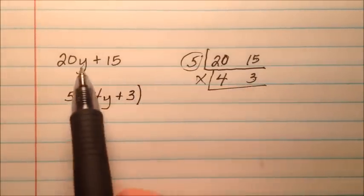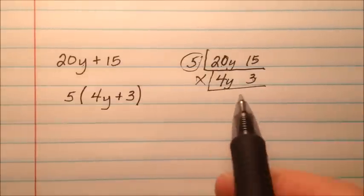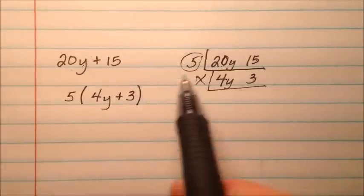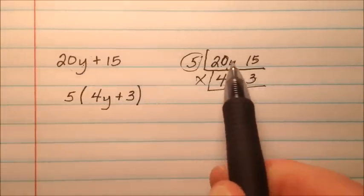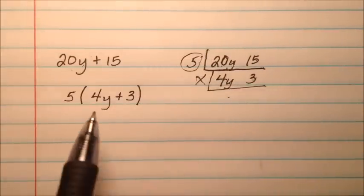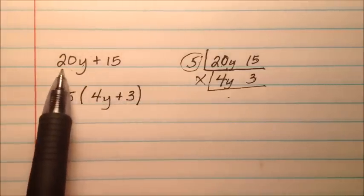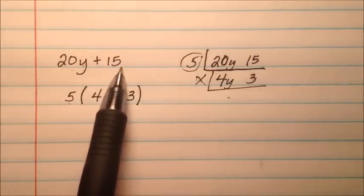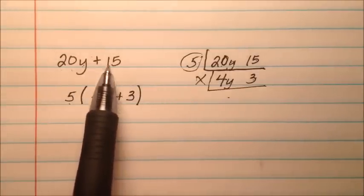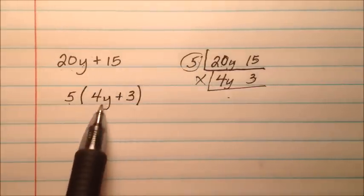We could've just as easily included the y right here, and when we divided out the 5, the y just came along for the ride. So if you're confused by the variable or forget to bring him along, maybe go ahead and put him in this box as well. Well, when we find the greatest common factor, he'll just keep coming along for the ride. So we're saying that 5 times the quantity 4y plus 3 is the same as this 20y plus 15. But instead of using the distributive property to go from here to here, we're using what we call factoring to factor out the greatest common factor to go from here down to here.